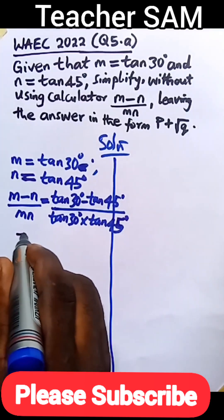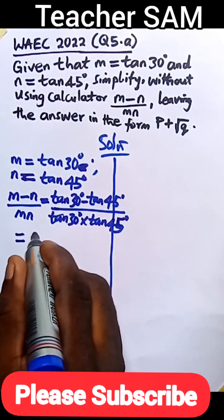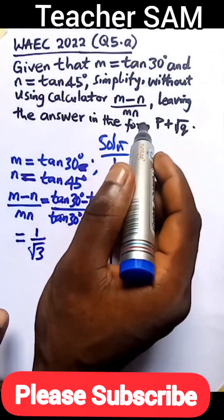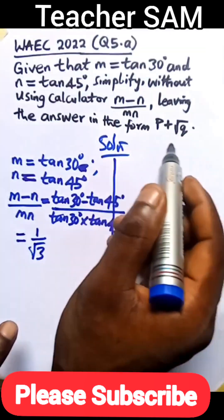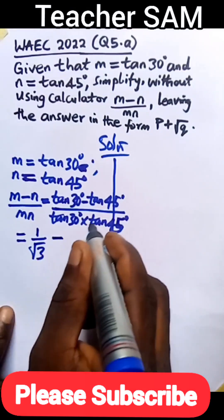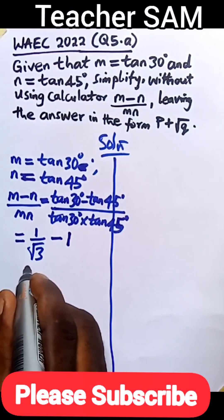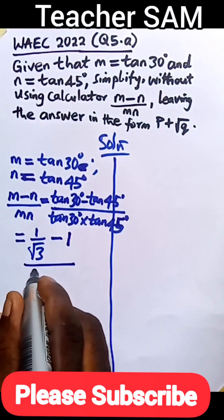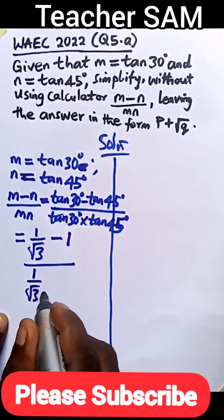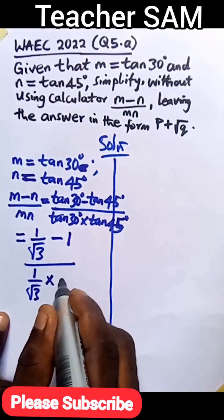This is equal to: tan 30 degrees is 1 over root 3, as given to us in short form, and we are asked to leave our answer in that form. So minus tan 45 degrees which is 1, then divide by 1 over root 3 — that is tan 30 degrees — times tan 45 degrees which is 1.